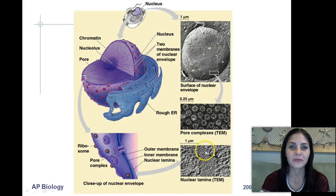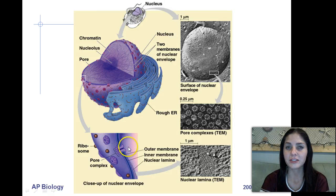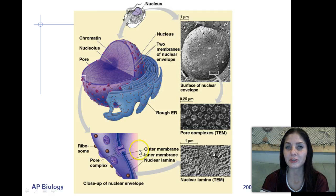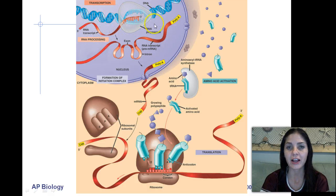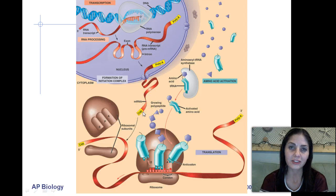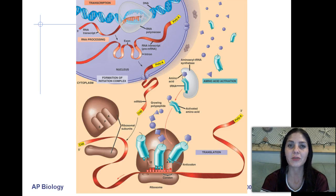Right here we have our nucleus, and this right here is going to be a nuclear pore. This is what the messenger RNA is going to travel through whenever it's going into the cytoplasm and exiting the nucleus. After the transcript from the DNA is made as messenger RNA, that messenger RNA is going to exit the nucleus through a nuclear pore and into the cytoplasm. Once it's in the cytoplasm, it's going to begin translating into a protein on the ribosomes.